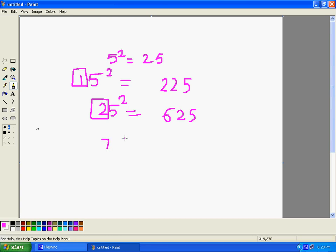So suppose we have to find out square of 75 quickly. 25, 25, 7 into 8, 56. So 75 square is 5625.